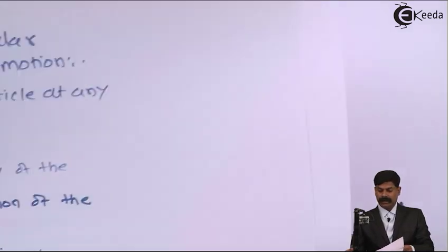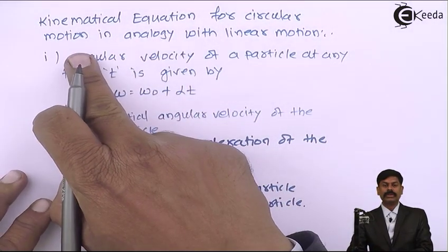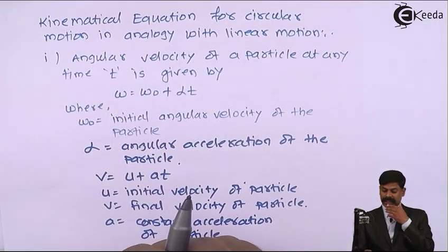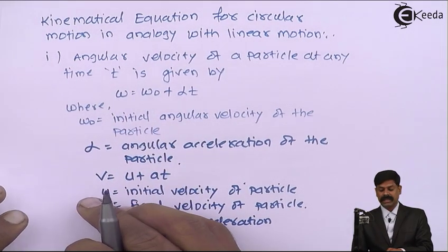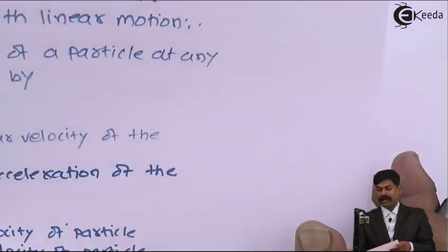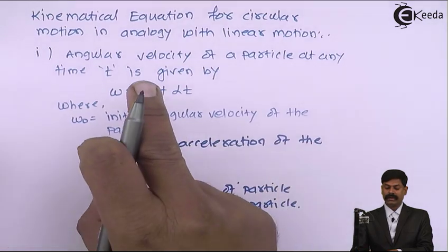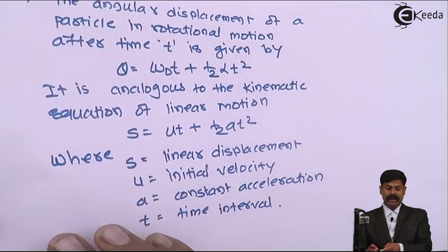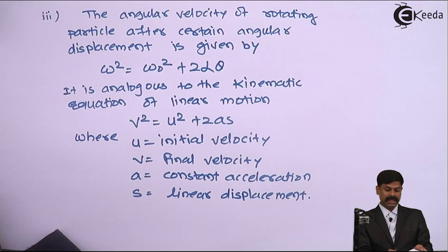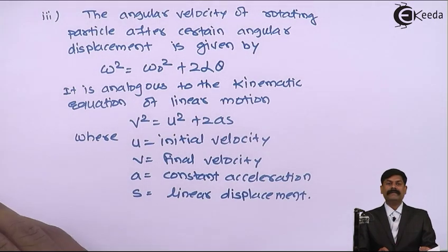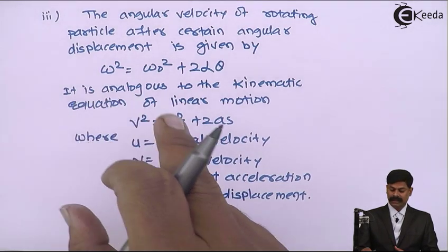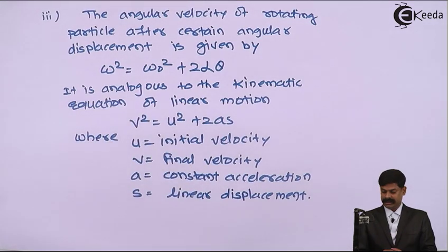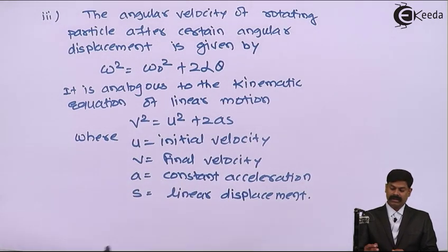We have discussed the kinematical equations for circular motion in analogy with linear motion. There are three types of equations analogous to linear motion: the angular velocity equation, the angular displacement relation, and the angular velocity relation after certain angular displacement. These are the analogous equations to the linear kinematic equations for a particle performing linear motion. Thank you.